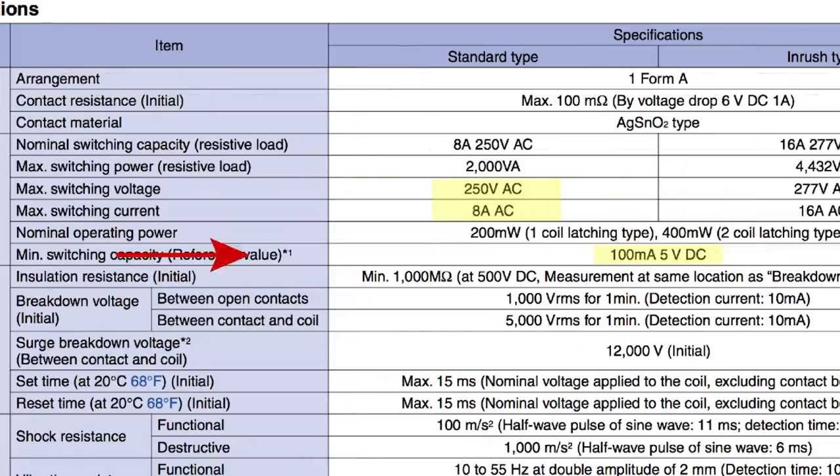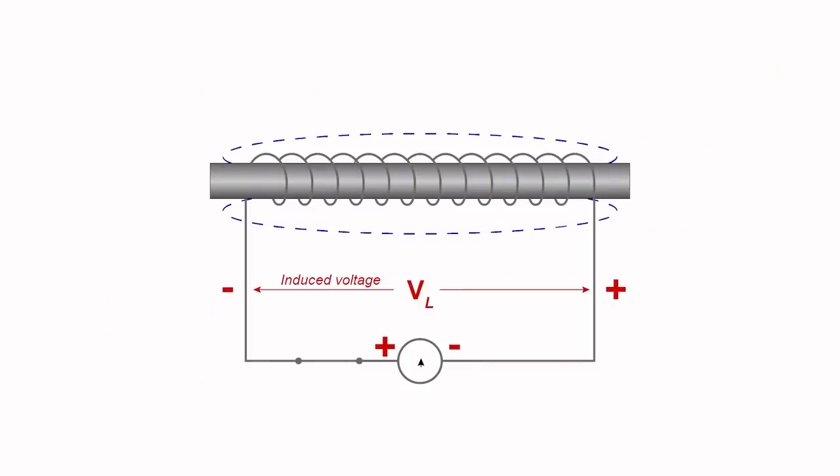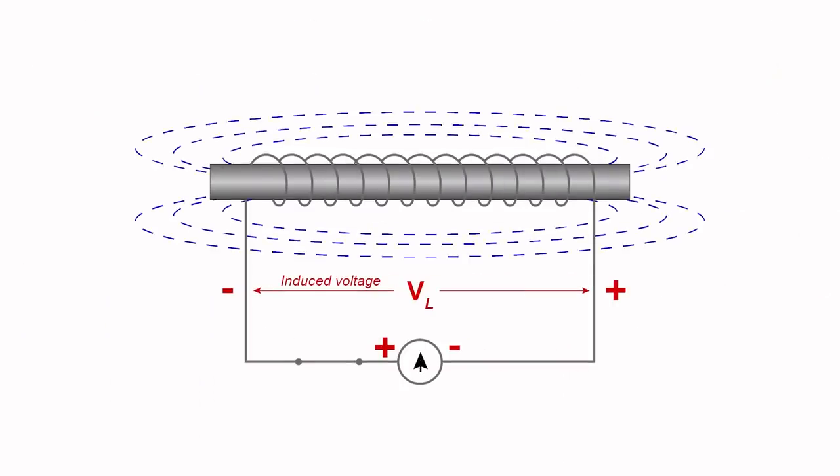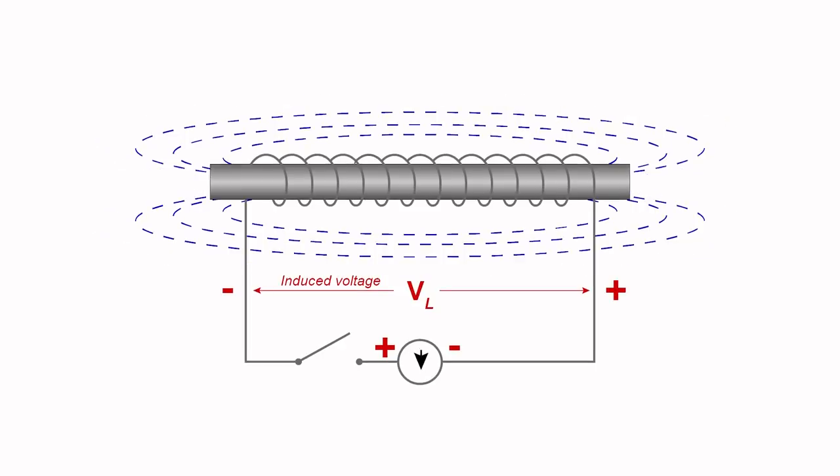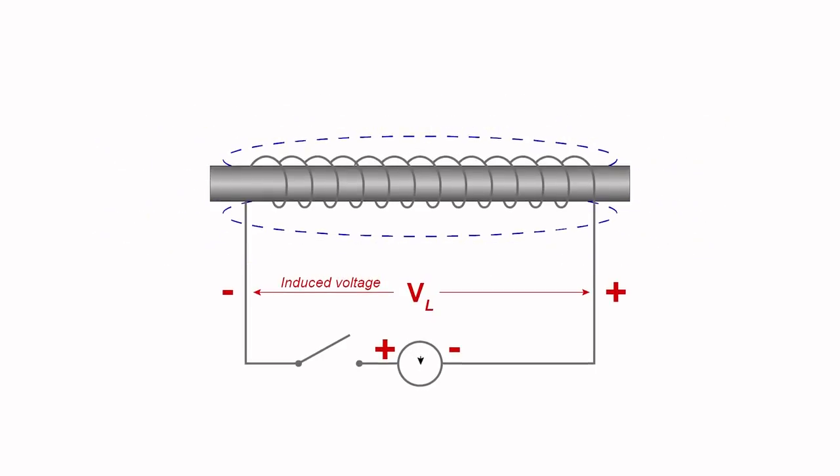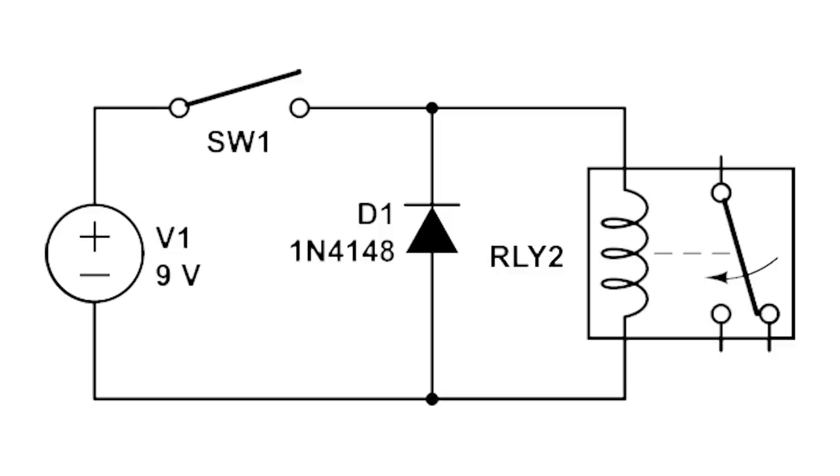While relays do require a second switch or signal to trigger them, they are useful in that the triggering power can be quite small while controlling a much larger amount of power. One thing to remember when using relays is that the change in current in inductors can create a large back EMF, a voltage spike, that can damage other components in the circuit. For this reason, a flyback diode is often added to a circuit parallel to the coil to help protect these components.